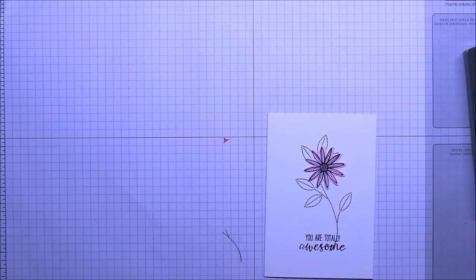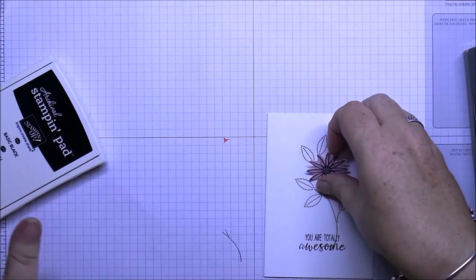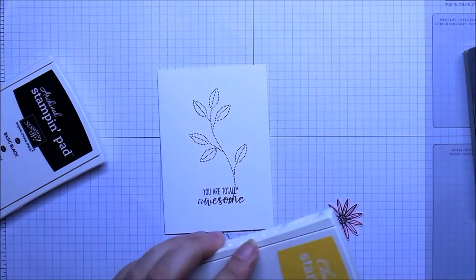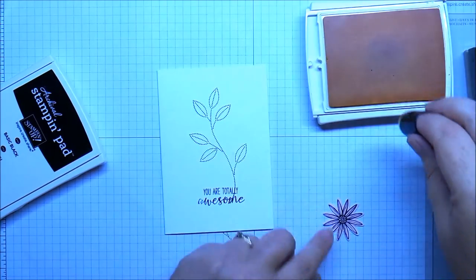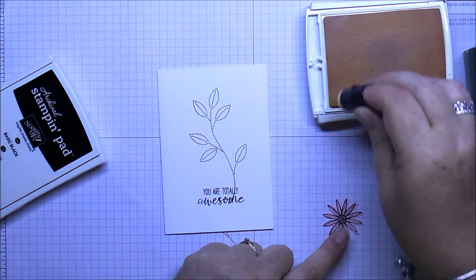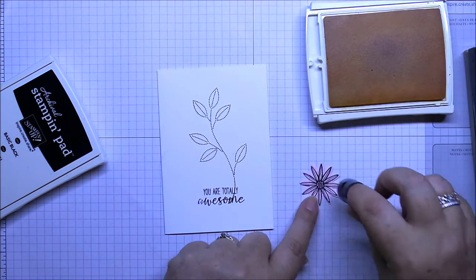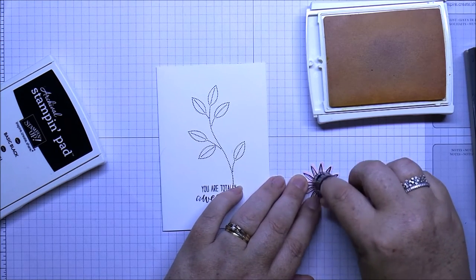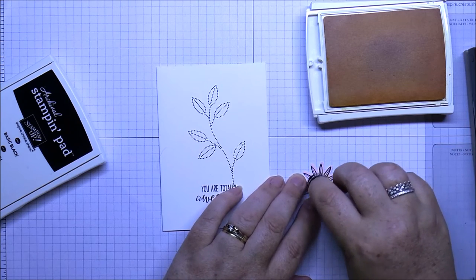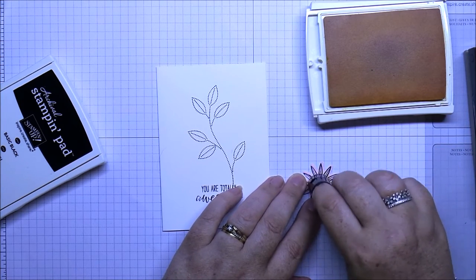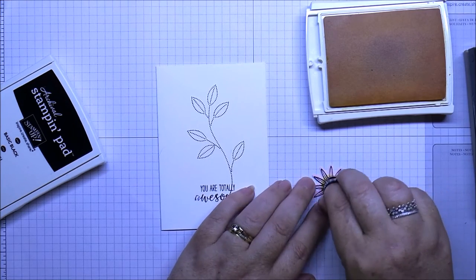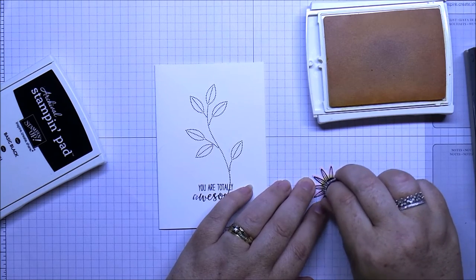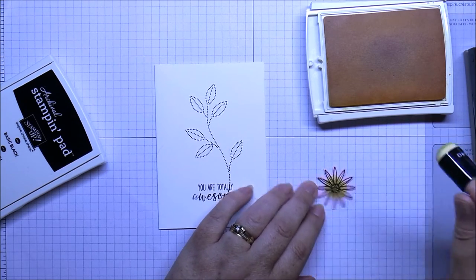Okay, so before we pop that down, what we're going to do is we're going to get a dauber and our Daffodil Delight pad. All right, and then we're just going to sponge in the middle. You can just wiggle it around if you want. I've gone over one side from the other, so I'll just—there.